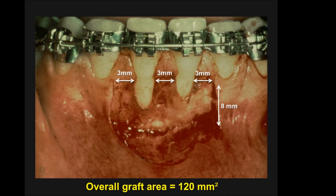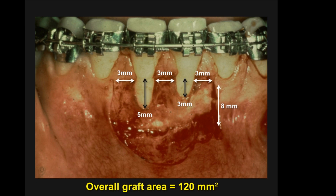We have three millimeters of butt joint margin across the central incisors. Adding three millimeters of avascular surface per tooth, the graft width is 15 millimeters. Coming three millimeters below the area of recession, the graft would be 15 by 18, with an avascular surface of approximately 24–25 square millimeters.